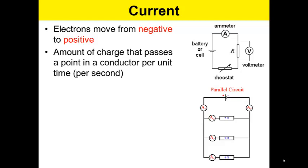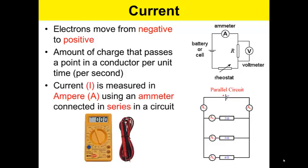The amount of charge that passes a point in a conductor per unit of time, so per second. Current, or I, is measured in amperes, which is represented by A, using an ammeter connected in a series circuit. So voltmeters are connected in parallel, and ammeters are connected in series.